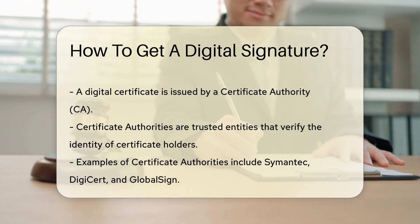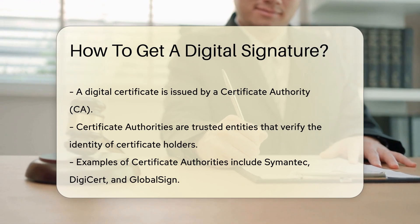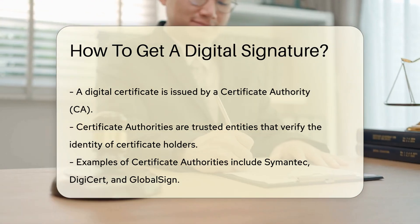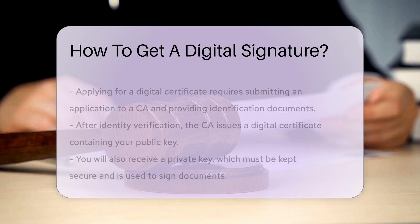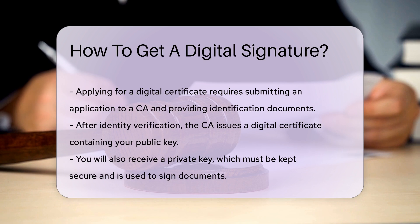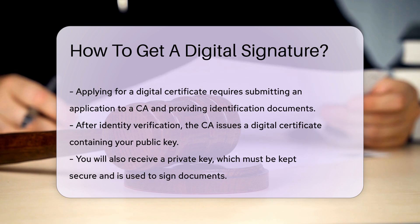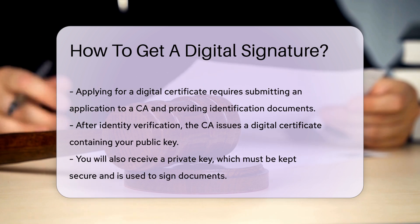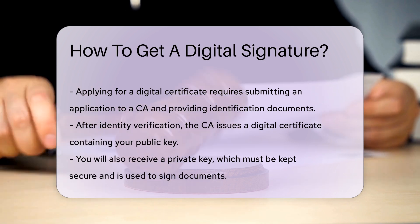To obtain a digital certificate, you must submit an application to a CA. The application process typically requires you to provide identification documents. Once your identity is verified, the CA will issue a digital certificate. This certificate contains your public key, which is used to create your digital signature. You will also receive a private key, which is used to sign documents and must be kept secure.